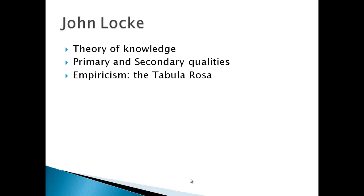He argued that for different things, there are qualities that make up those things. Primary qualities are qualities that cannot be changed — they are definitely objective and cannot possibly be disputed. For example, something is this long, this thick, or this size and shape. That can't possibly be denied because there's an objective scale of measurement, according to John Locke.